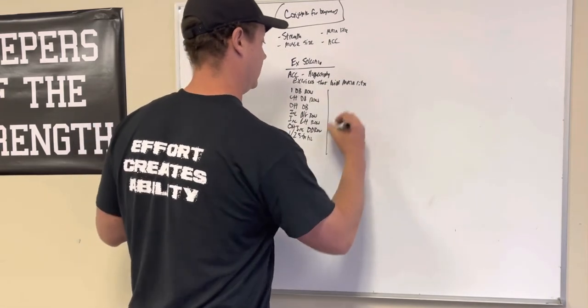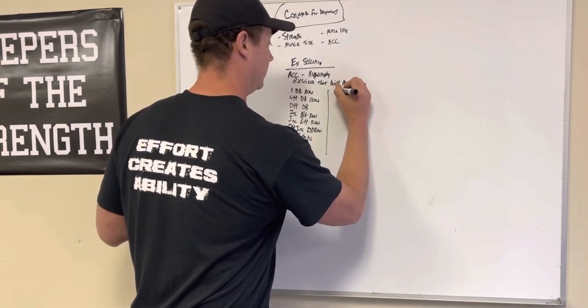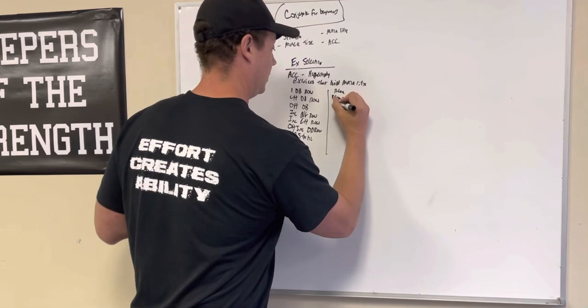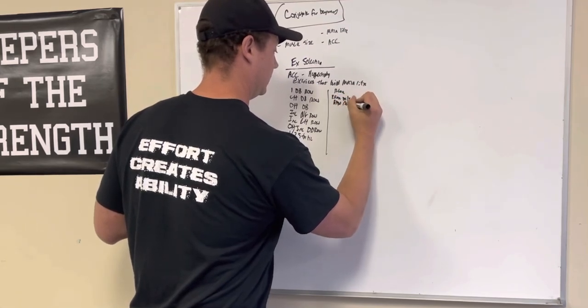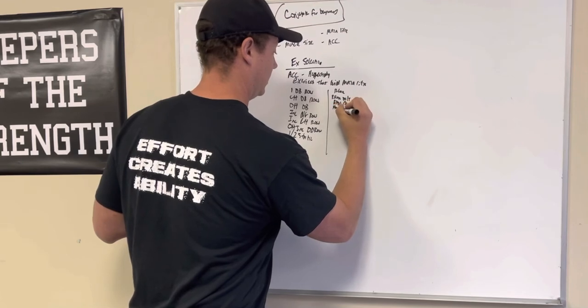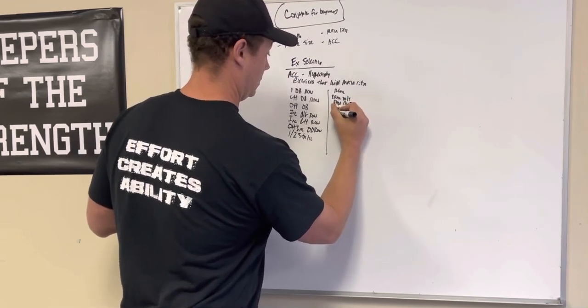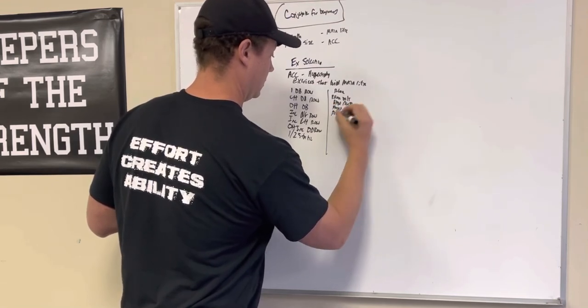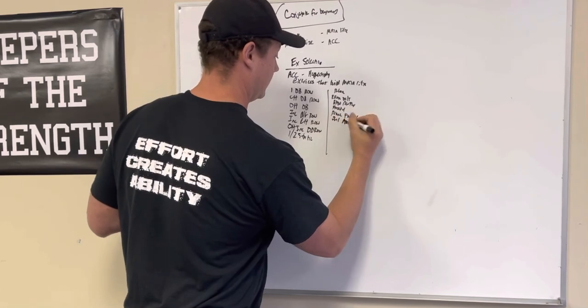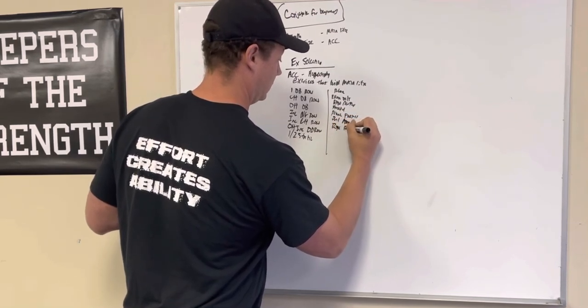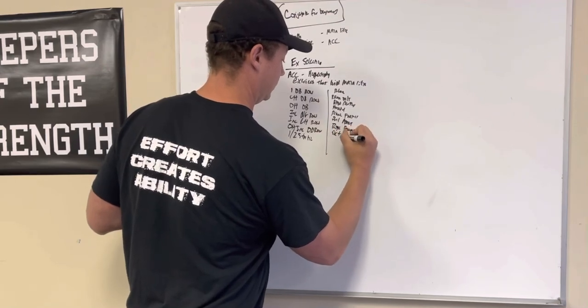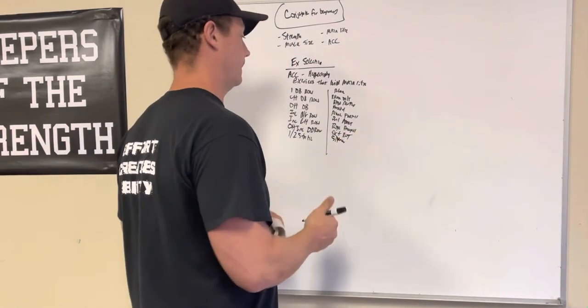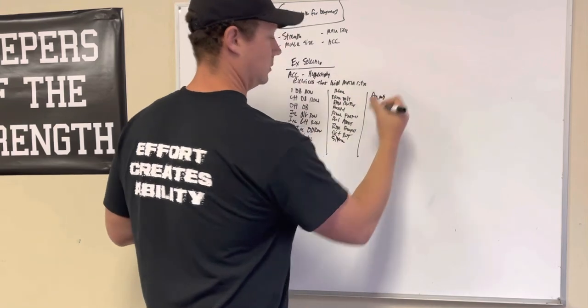So then you just can pair these with something for rear delt. So rear delt flies with dumbbells. Band reverse fly. Face pulls. Prone face pulls. Pull apart. Rope face pulls. External rotation exercises. And we'll throw in shrugs there.